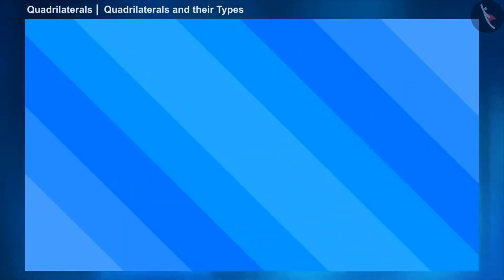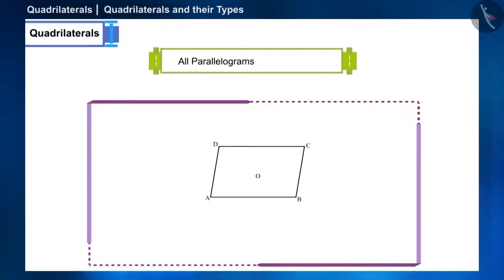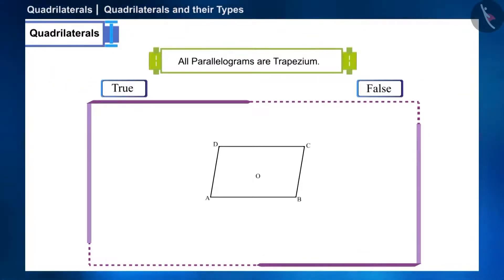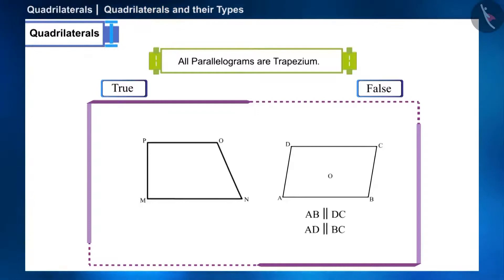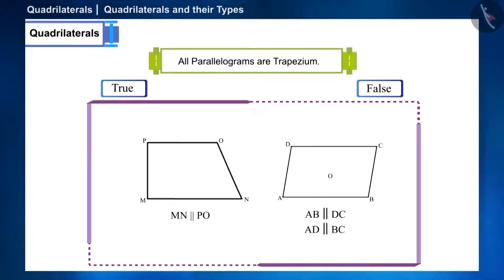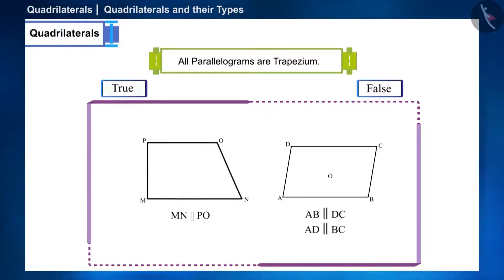Let's see the second statement: all parallelograms are trapezium — is this true? By the definition of parallelogram, pairs of its opposite sides are parallel. To be a trapezium, only one pair of sides must be parallel — that is the only condition. Since a parallelogram already satisfies this, we can say parallelograms are trapezium. The given statement is true.